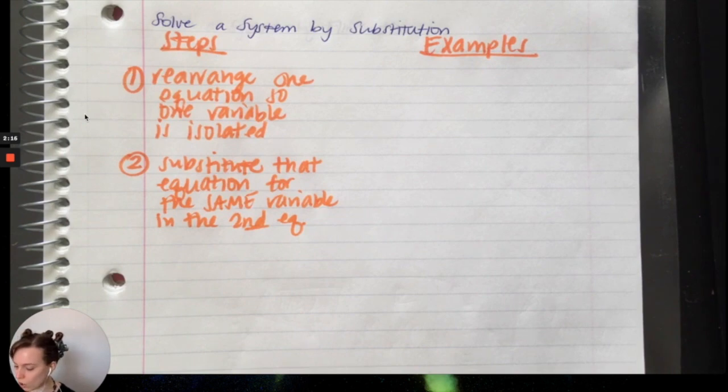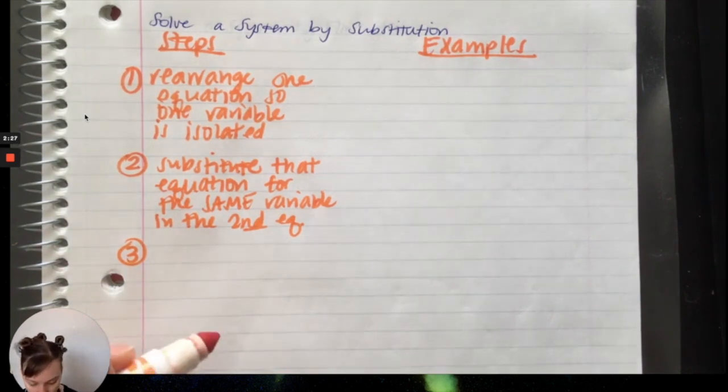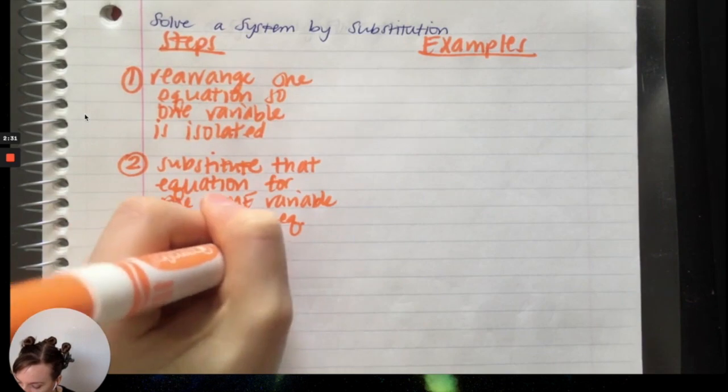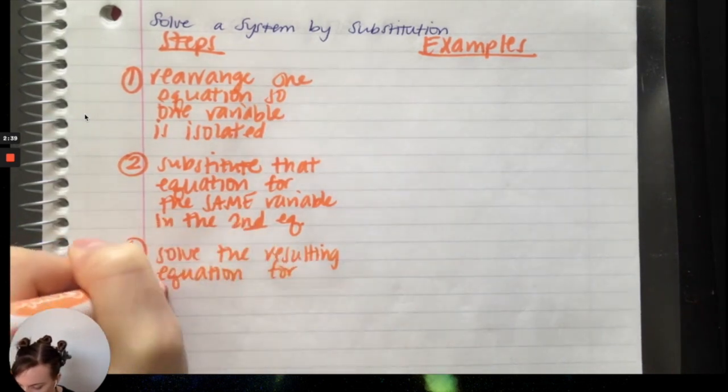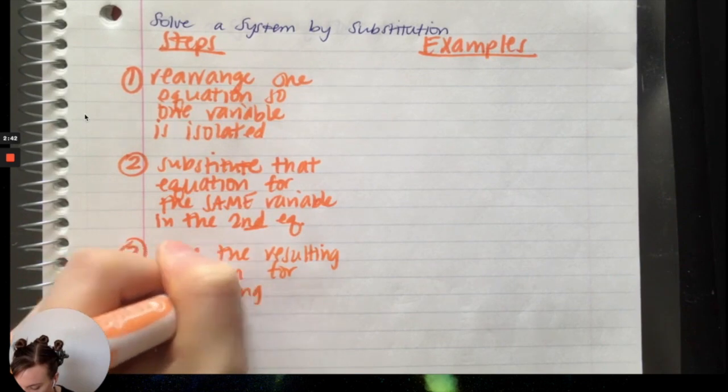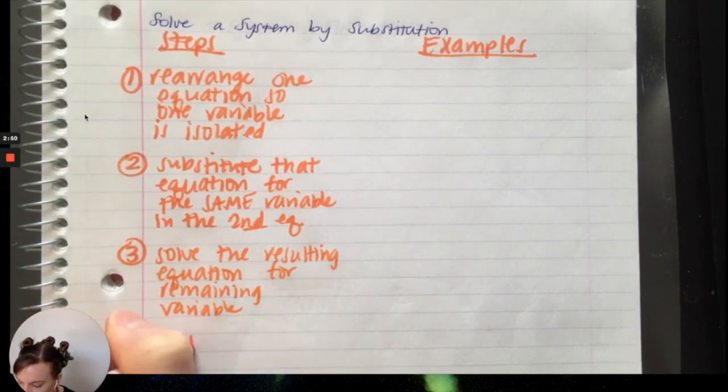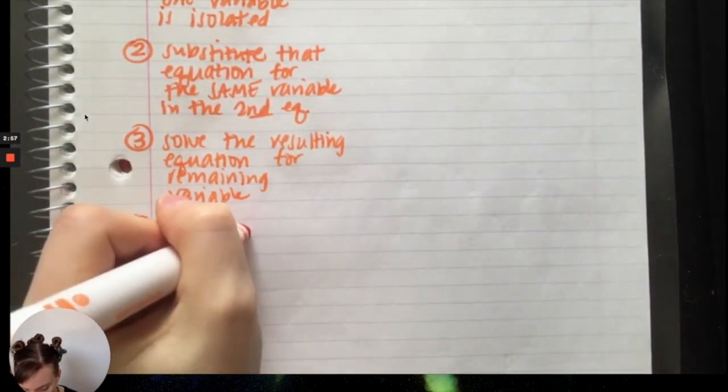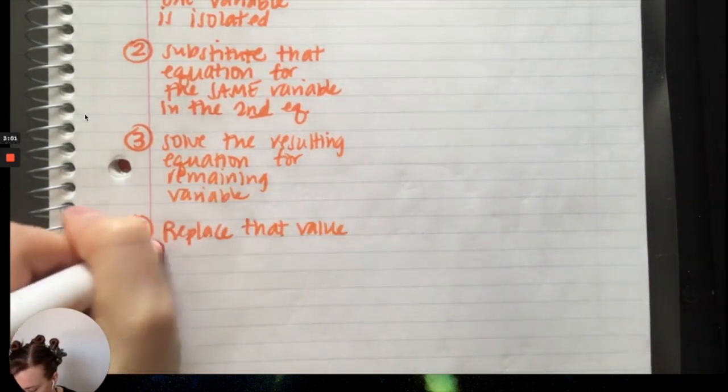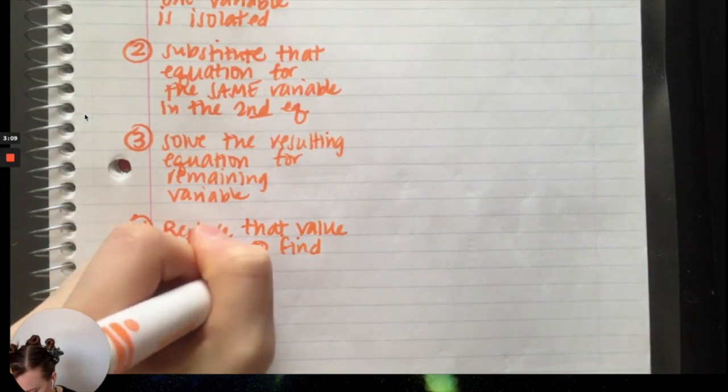And we're going to use equation a lot, so if you want to abbreviate it with EQ, you're welcome to. And we're still working with the definition that a system of equations is only two equations for this unit. Then we're going to solve the resulting equation for the remaining variable. And fourth step, we're going to replace that value back in to find the second variable.